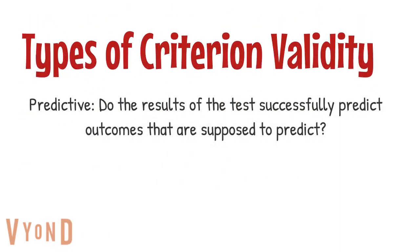Predictive validity is a type of criterion validity that asks: do the results of the test successfully predict outcomes they are supposed to predict? So in the case of Ball Tai's intelligence test, high scores should predict later success in school, education, and career.